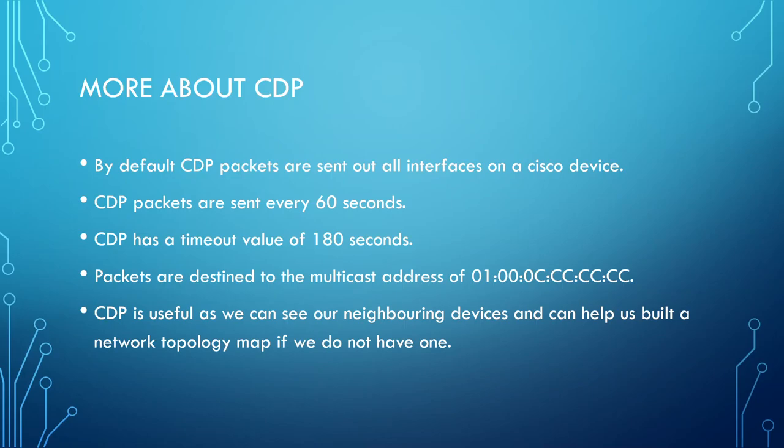CDP packets are sent to the multicast address 01:00:0C:CC:CC:CC. Cisco devices with CDP enabled on an interface will be part of a multicast group and listen on that multicast address for any packets with that destination Ethernet MAC address. CDP is so useful because our Cisco devices are talking to each other, telling each other information about themselves. We can log into one device and see all the other devices that it connects to.